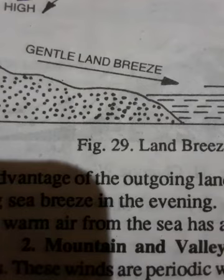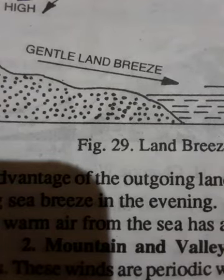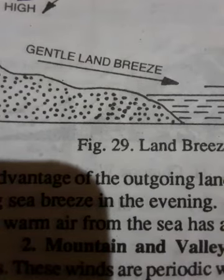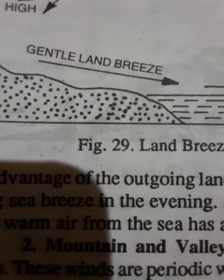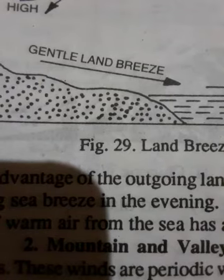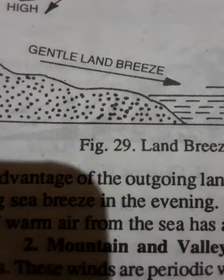Under this condition during the day, the air blows from the sea to land as there is high pressure on the sea, and wind always blows from high pressure to low pressure. The air movement from the sea to land reaches the greatest intensity during the afternoon. In the equatorial region, it is a regular phenomenon where it brings some relief to the hot, humid coastlands.